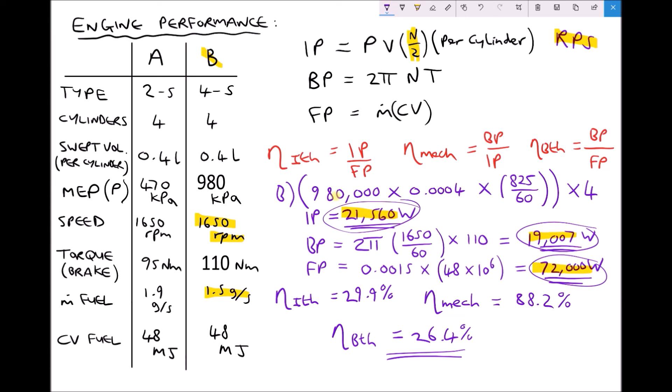To summarise, in this video we have looked at how we calculate indicated power, brake power, and fuel power for both 2 stroke and 4 stroke engines — noting that when we calculate indicated power for 4 stroke engines we must divide the rotational speed by 2, because we only deliver power every 2 revolutions. We then looked at how we calculate the indicated thermal efficiency, the mechanical efficiency, and the brake thermal efficiency, which represents the true overall efficiency of the engine.